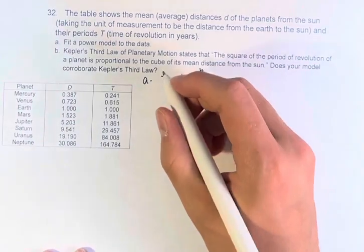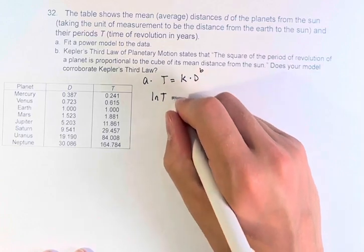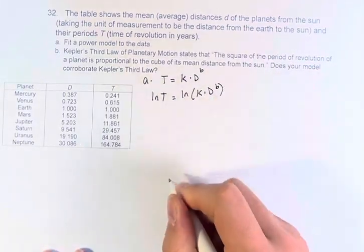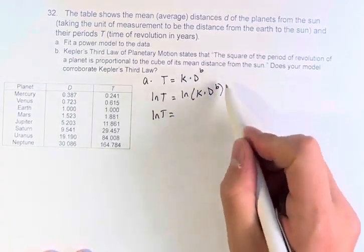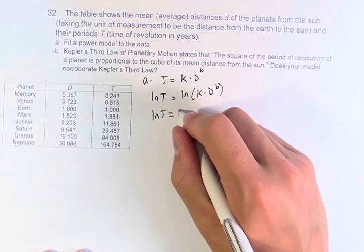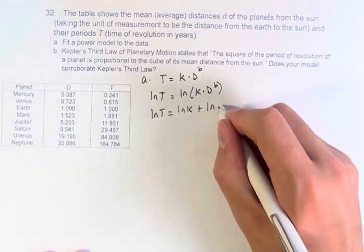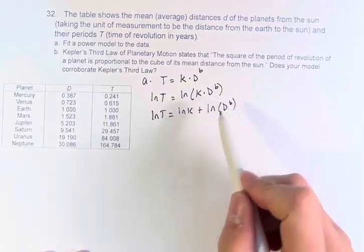So the first thing we do is we take the ln of both sides. So the ln of t, the natural log, is equal to the natural log of k times d to the b. The natural log of t is equal to, if we have two things being multiplied within the natural log, we can take the sum of their natural logs. So this is the natural log of k plus the natural log of d to the b.